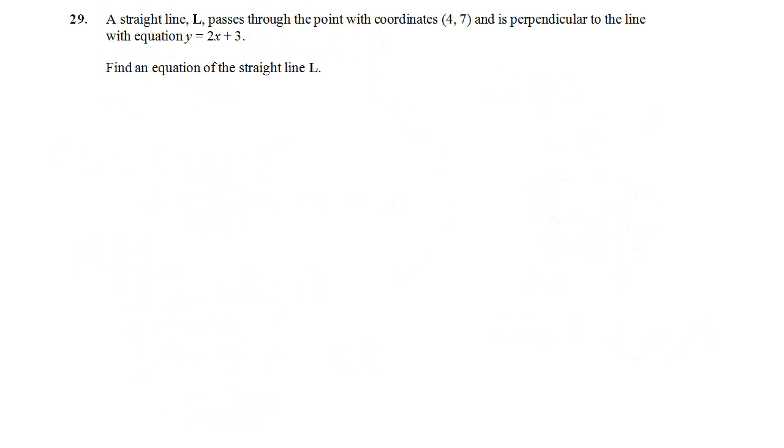Number 29. We are given a line L, and it passes through the point with coordinates (4, 7). And it's perpendicular to this other line, y equals 2x plus 3. And again, we want an equation. So this is becoming familiar. We need two things. We need a point and a gradient. And again, it passes through (4, 7), so we're given a point. So again, it's a matter of working out the gradient.